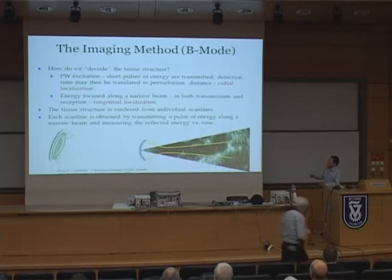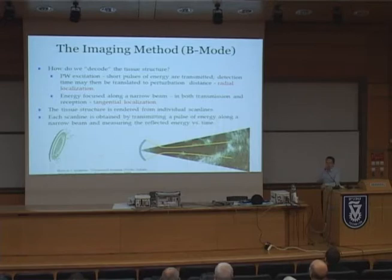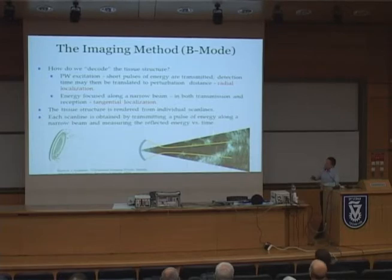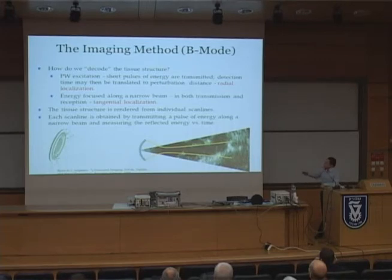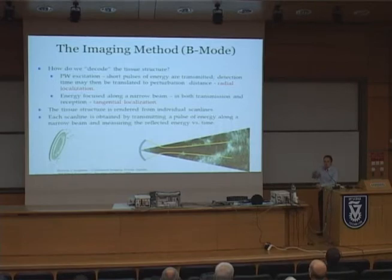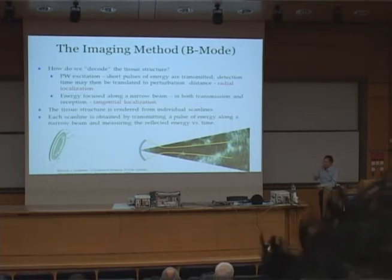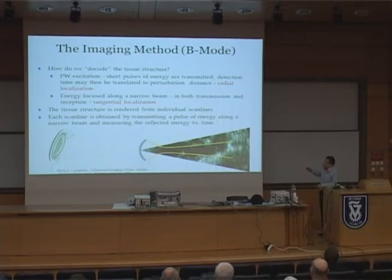An interesting question is how does a conventional ultrasound system recover the structure of tissue from reflected energy. This is quite similar to radar or sonar. By controlling the regime by which we transmit and detect energy, we can find a straightforward relationship between the reflected energy and the structure of the tissue. If the transducer transmits by pulse wave excitation — short pulses of energy — we get a straightforward relationship between the time we detect the echo and the distance to the perturbation causing that echo, giving us radial localization.